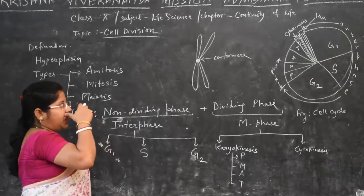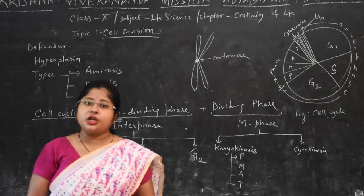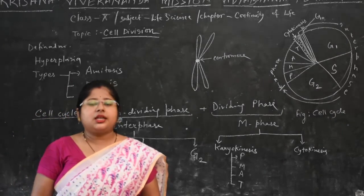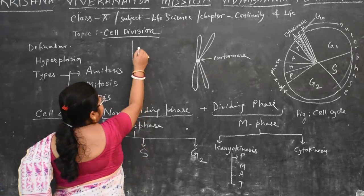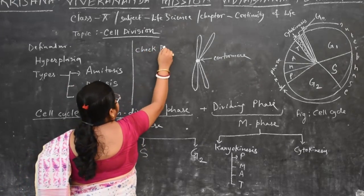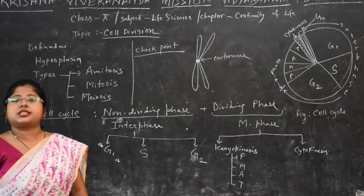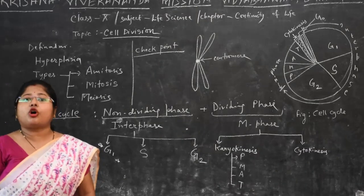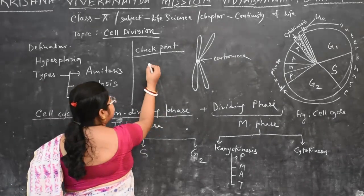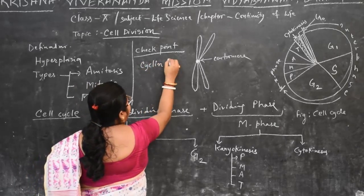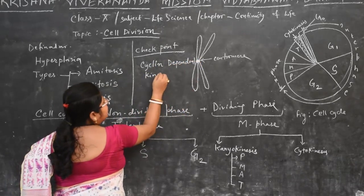There are different types of enzymes and protein molecules that regulate the cell cycle at certain points, and these points are known as checkpoints. Examples include cyclin-dependent kinase enzymes, P53 protein — a protein whose molecular weight is 53 Daltons — and retinoblastoma protein.